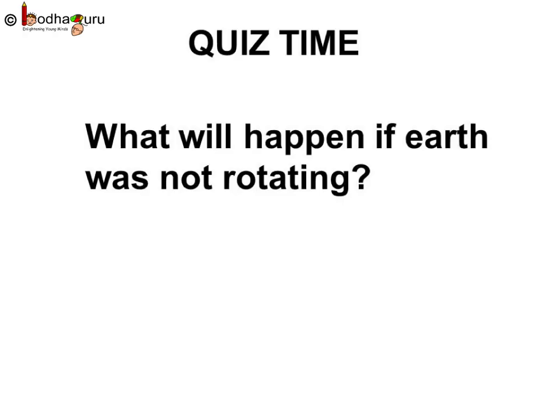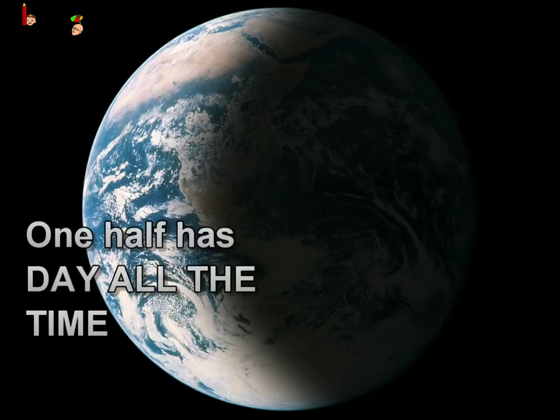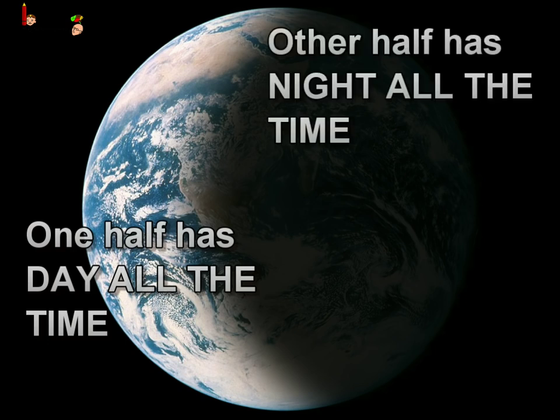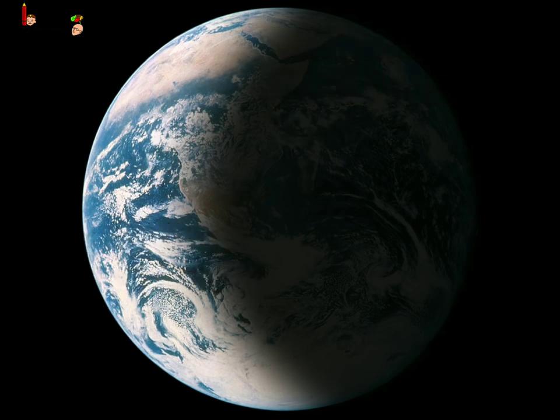Another one. Imagine what will happen if Earth was not rotating. You got it! Only one half of the Earth will always be having day time, and the other half will always be having night time. Ouch! That will really be bad, right? Just having day, no night. Or just having night, totally dark, no day.